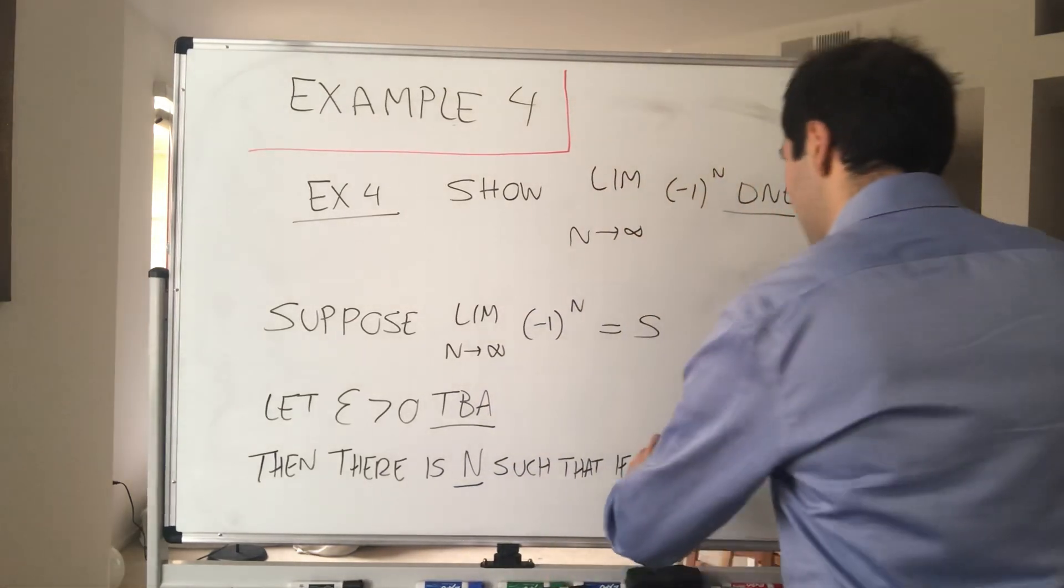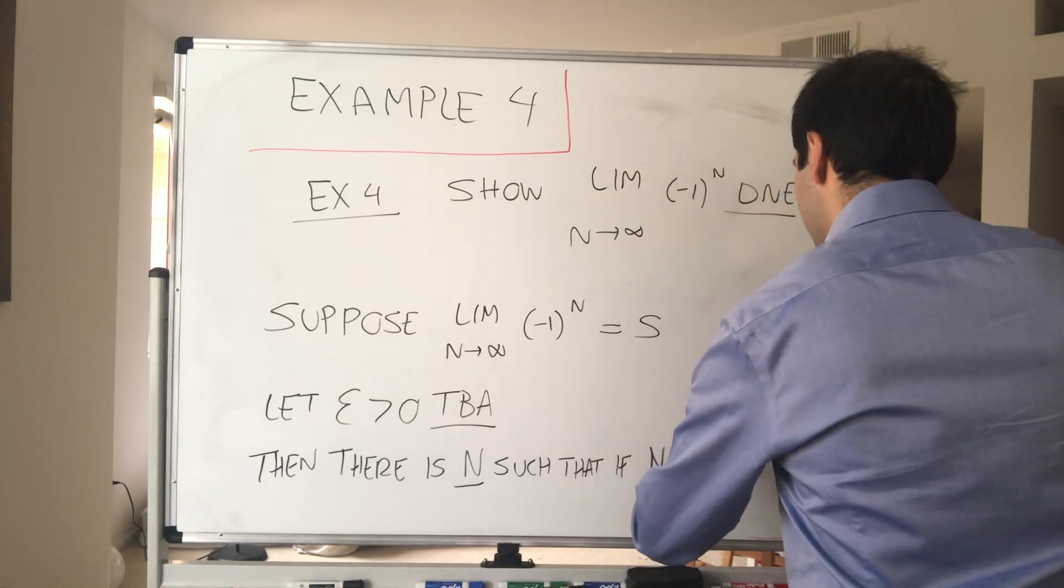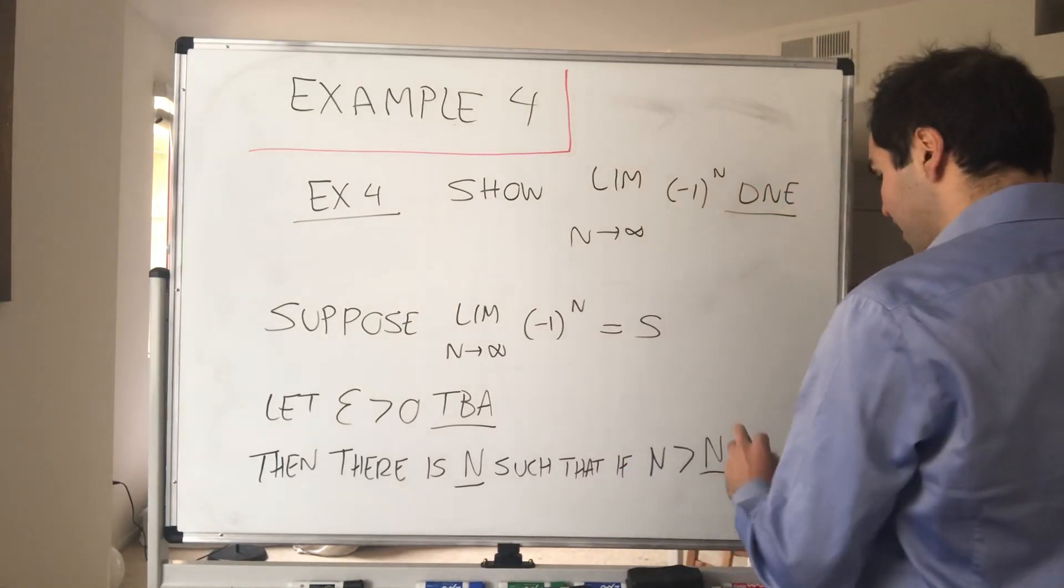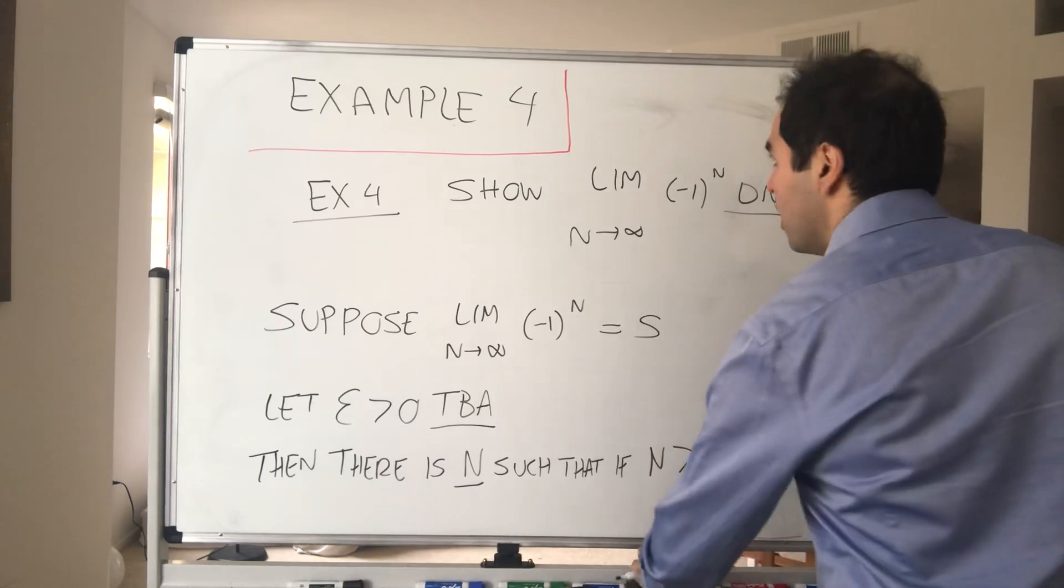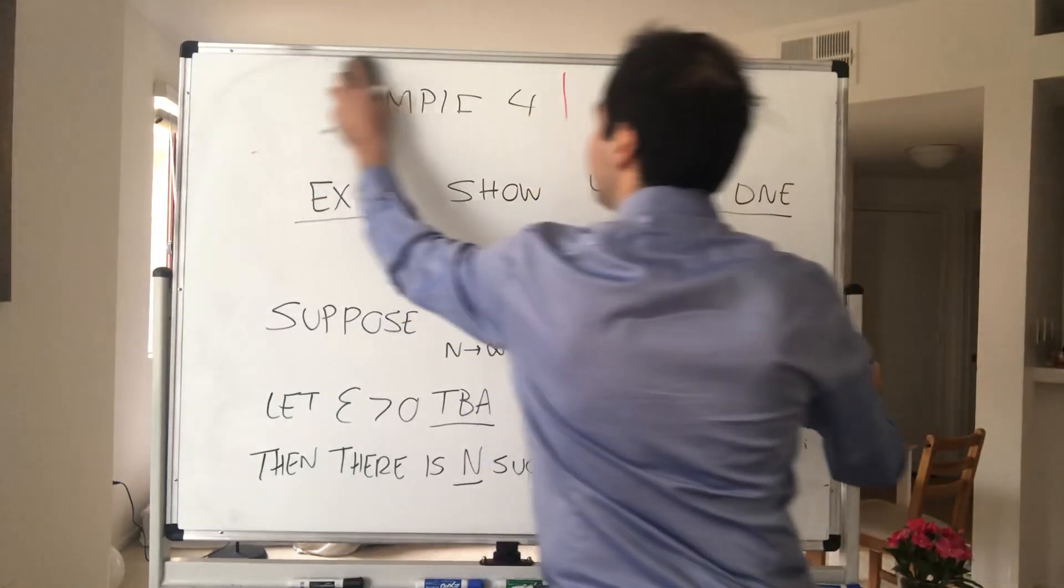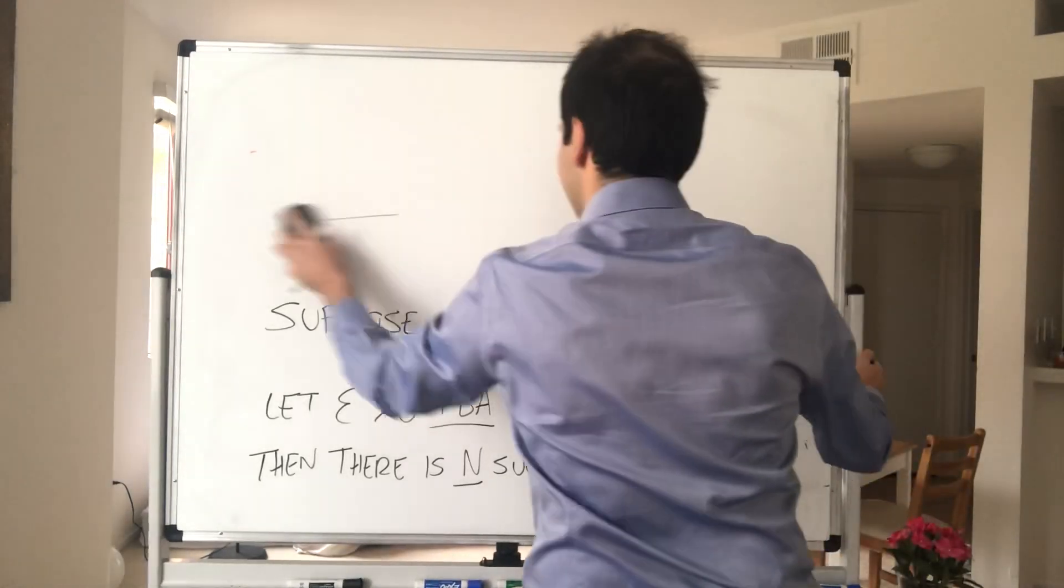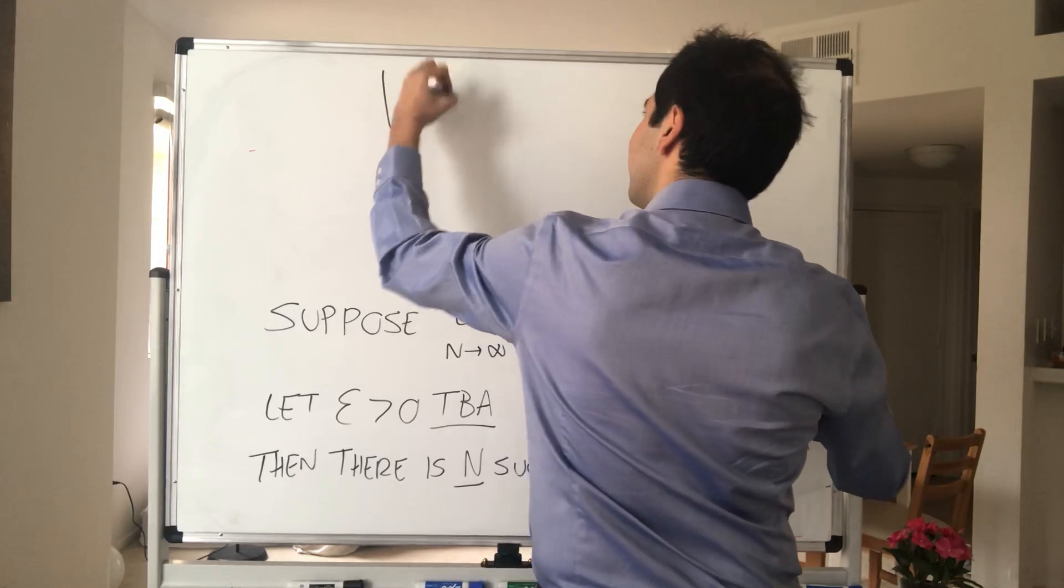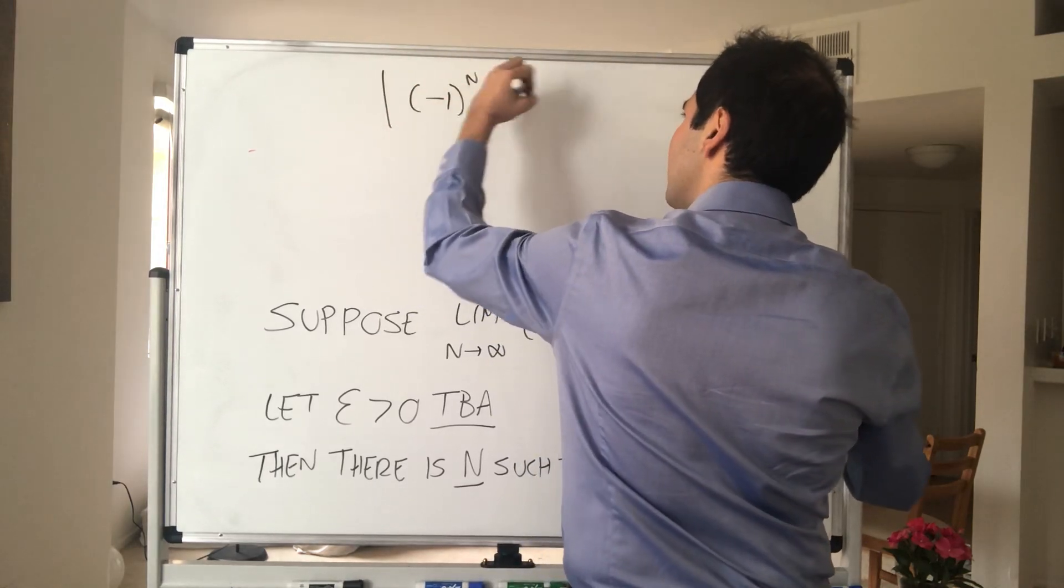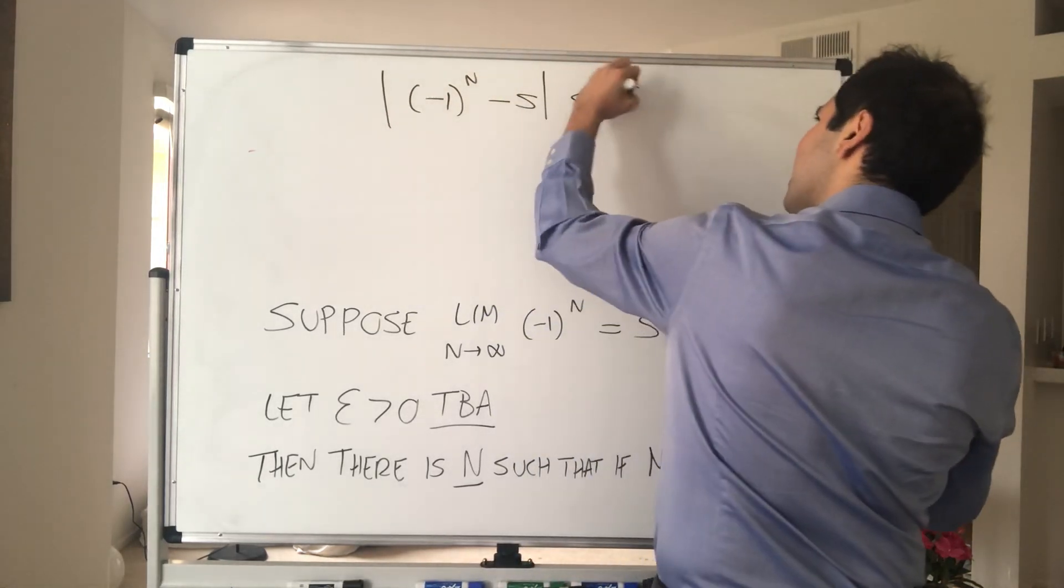So let epsilon be to be announced, then there is some threshold. If n is bigger than that threshold, so once you pass that threshold, then what you get is |s_n - s| < epsilon, which means, in this case, |(-1)^n - s| < epsilon.